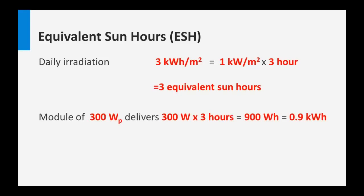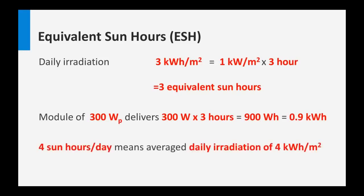This is a handy unit parameter. If we consider the module of 300 watt peaks, it means that on one day, on average, if you have 3 sun hours, it delivers 300 watts times 3 hours, which is 900 watt hours or 0.9 kilowatt hours of energy. So if we would have 4 sun hours per day, the average daily irradiation would be 4 kilowatt hours per square meter.